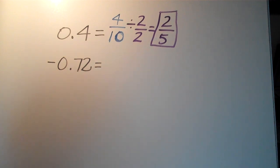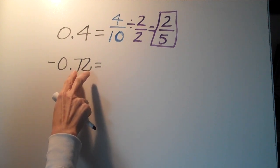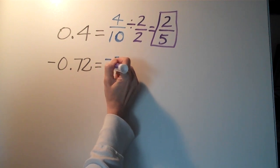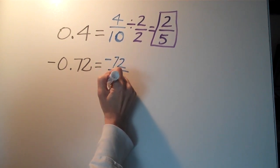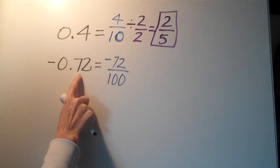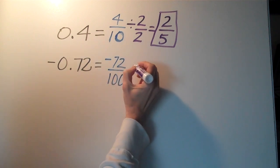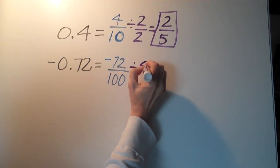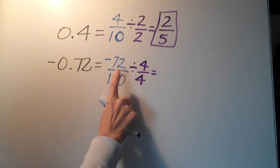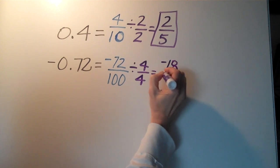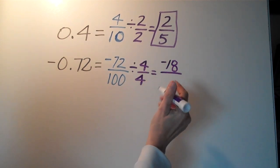We're going to try another one. In this case, this is the tenths place, this is the hundredths place. So if we were to write this as a fraction it would be negative 72 over 100 because it's negative 72 hundredths. And again we're going to divide, this time we'll divide by 4 because we know both of these are divisible by 4.